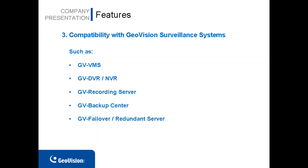Feature number three: GV Storage System v2 is compatible with the GeoVision surveillance system and software. With its large storage capacity and high availability, GV Storage System v2 is an ideal choice for safe and long-term data storage. It is compatible with the VMS, DVR/NVR, backup center, recording server, and lastly, it is also compatible with the redundant server and failover server.